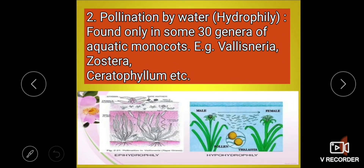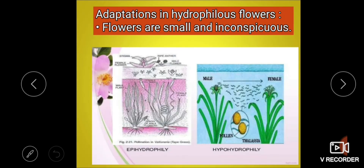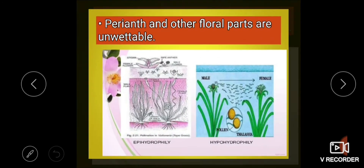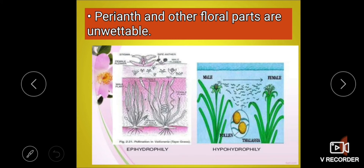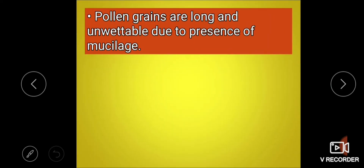The next topic is pollination by water, called hydrophily. It is found in only about 30 genera of aquatic monocots, for example Vallisneria, Zostera, and Ceratophyllum. Similar to anemophilous flowers, hydrophilous plant flowers are small and inconspicuous. The perianth and other floral parts are unwettable. Perianth refers to when sepals and petals are not differentiated — they are similar, and individual members are called tepals.